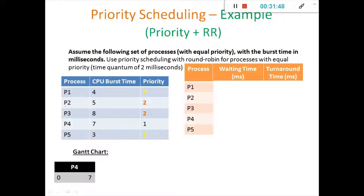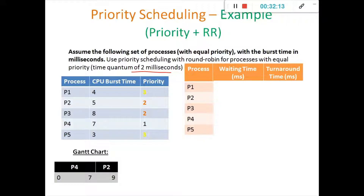You can start off with process P2. Here a time quantum will be given — if you make use of round robin then you have to make use of a time quantum. The time quantum given here is 2 milliseconds. So P2 first executes for 2 milliseconds, then it moves to P3. So 7 plus 2 equals 9 — it moves to P3, which executes for 2 milliseconds.